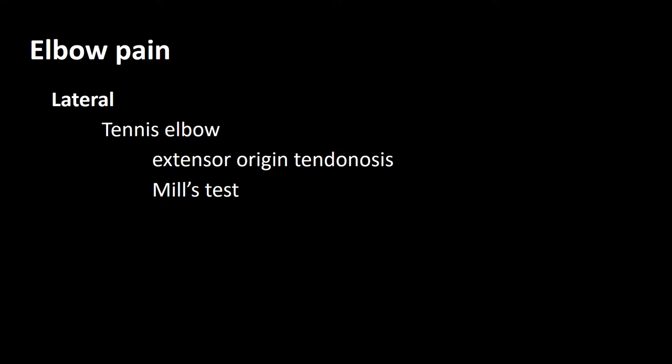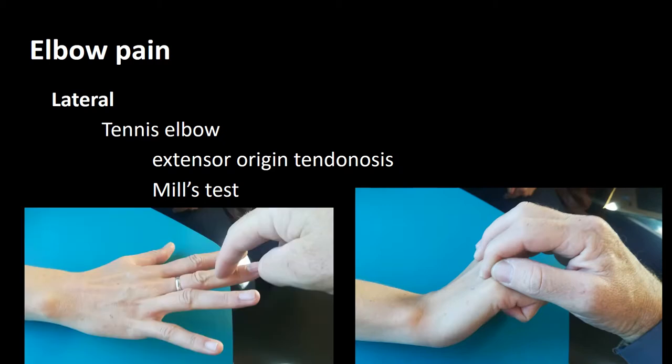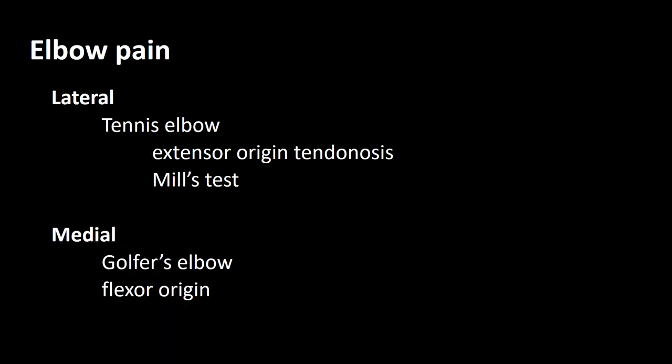Elbow pain may be due to local pathologies involving the muscle origins. Laterally, the extensor muscle origin may present with pain in so-called tennis elbow. This is easily excluded with Mill's test, where one does resisted extension of the wrist, which results in severe pain in the extensor origin in tennis elbow. Similar tests can be done with downward pressure on the middle finger. The flexor muscle origin may also cause pain and is termed golfer's elbow, which can be provoked with resisted flexion of the hand.